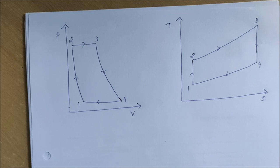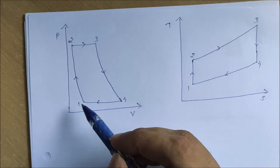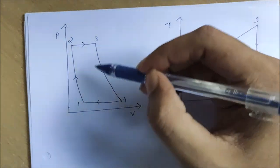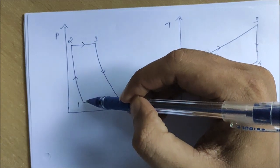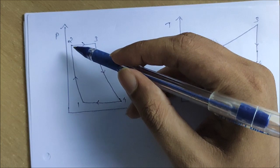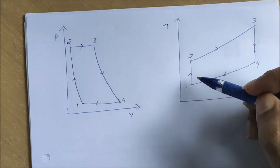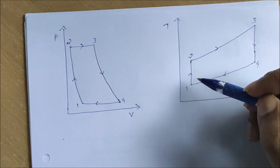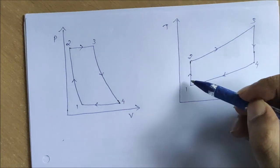Now we want to draw the PV and TS diagram for the Brayton cycle. The first process is isentropic compression, process one to two. In the PV diagram, the pressure increases from state one to two. In the TS diagram, the compression is isentropic, so process one to two is a constant entropy process along the entropy axis.